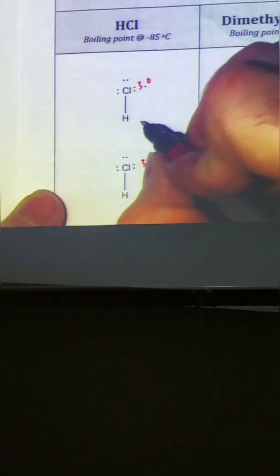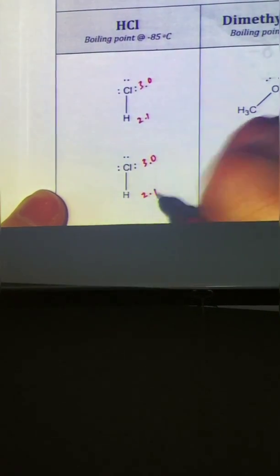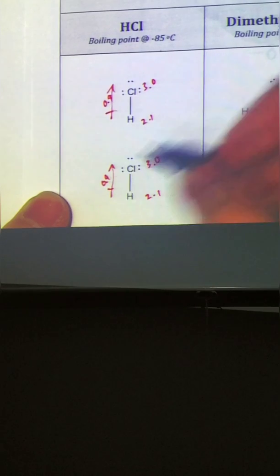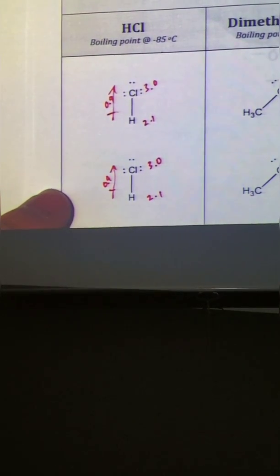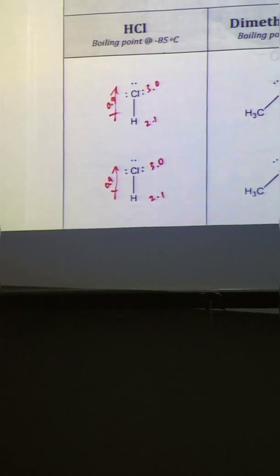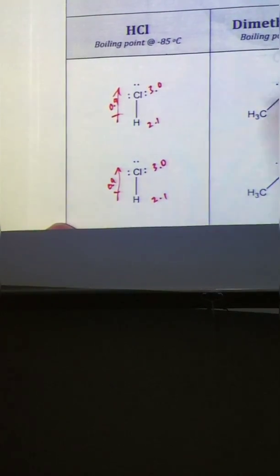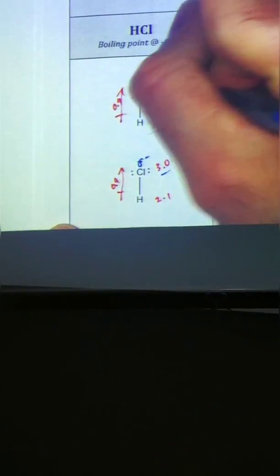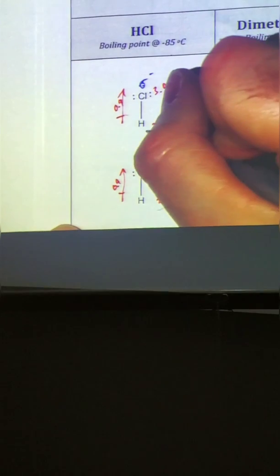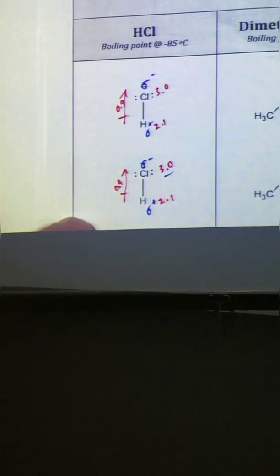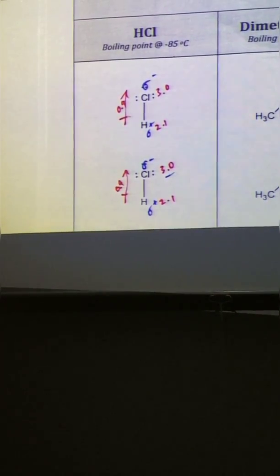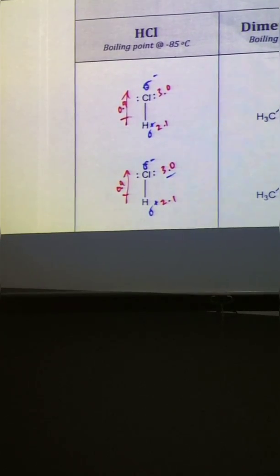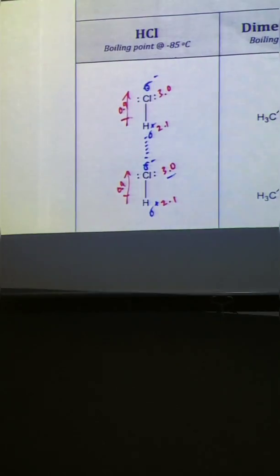So for chlorine, 3.0 in electronegativity. Hydrogen, 2.1 in electronegativity. Still polar. This time only 0.9, which is still 0.5 or larger that we're looking for. And 0.9 again. Much like last time, we're looking for who's the biggest bully? Definitely 3.0. Very electronegative, so make it feel partially negative. Hydrogen's getting bullied, feel partially positive.